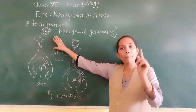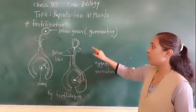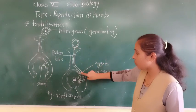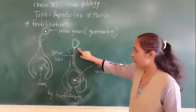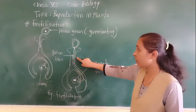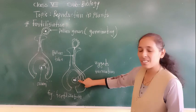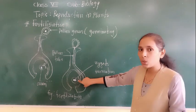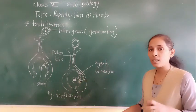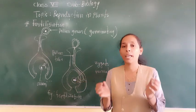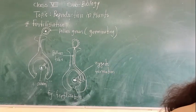The pollen grains contain the male sex gamete. Once the pollen grains come into the ovary — through the pollen tube that penetrates the stigma and runs through the style — the pollen grains burst into the ovary. In the ovary, there are already ovules. So the ovules and the pollen grains get fused, and they form one new cell which we call the zygote.